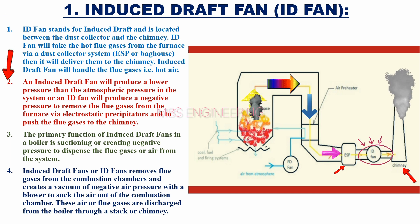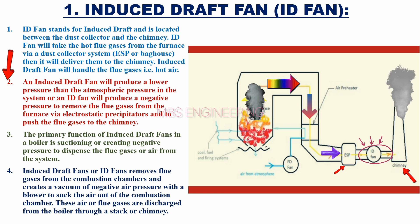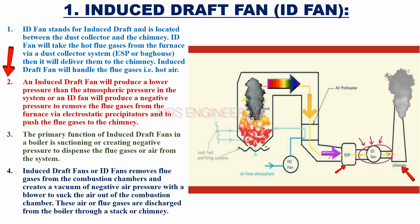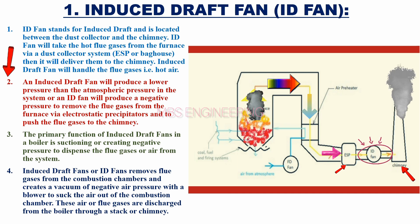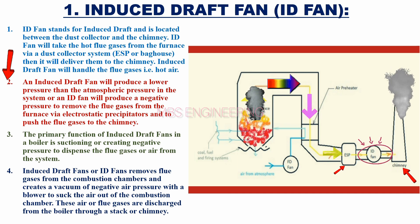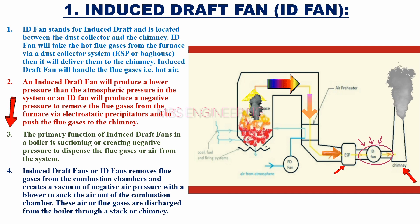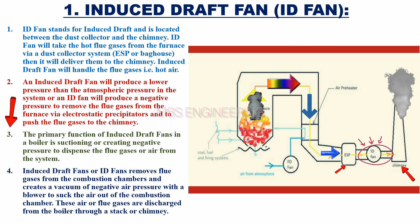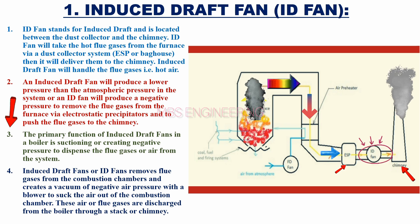The ID Fan will produce lower pressure than the atmospheric pressure in the system, or in other words, it will produce negative pressure to remove the flue gases from the furnace via electrostatic precipitators and push the flue gases to the chimney. The primary function of Induced Draft Fans in a boiler is suction — creating negative pressure to dispense the flue gases or air from the system.